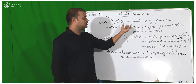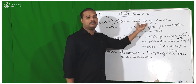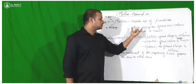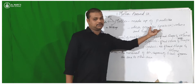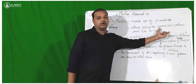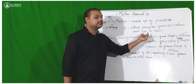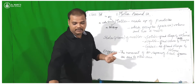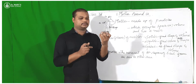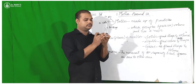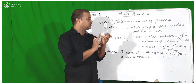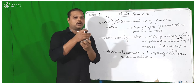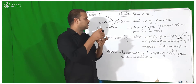Simply we can say that matter is made up of particles. Matter is made up of particles which occupies space or volume and has a mass. For example, we can take this conical flask — it has a volume, it has a mass, and it is occupying a certain space. So we call this conical flask matter.